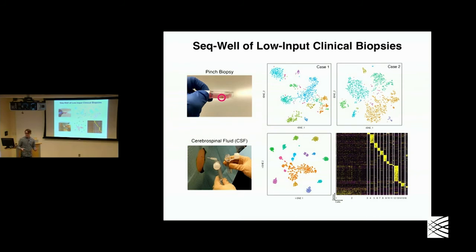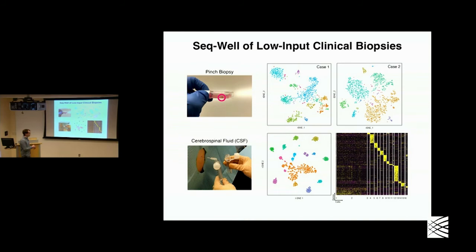Now that it worked on PBMCs, we thought we would apply it directly to clinical samples. We tried to find the lowest input clinical samples we could and talked to some people who had IBD samples. There's actually a sample in here — it's a pinch biopsy from the gut of an IBD patient. We're dealing with very few cells, but even with this low-input sample, we're able to reconstruct inflamed and uninflamed tissues at single-cell resolution.